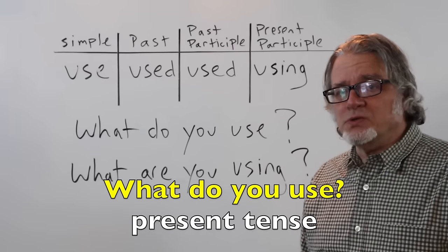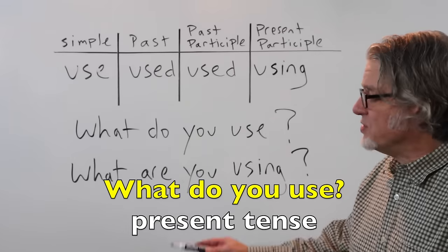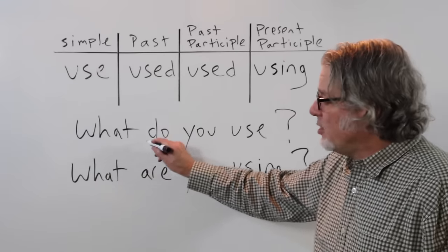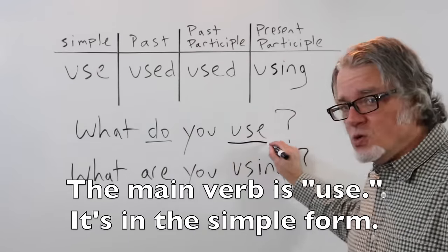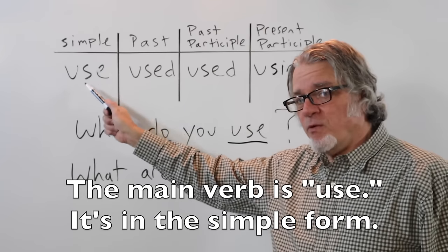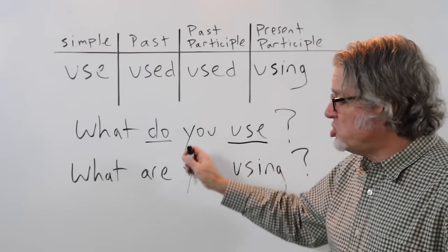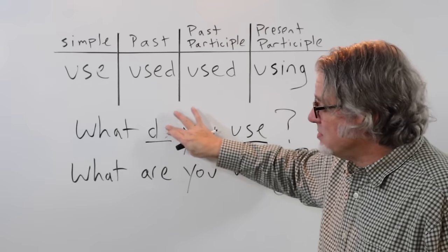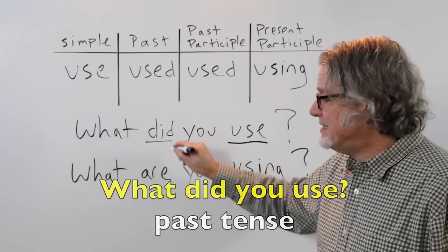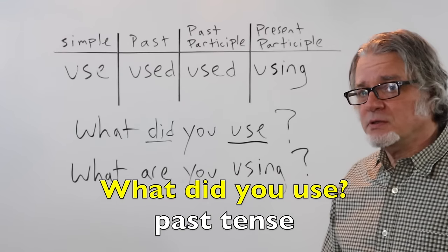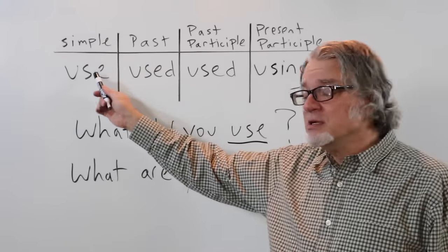What do you use? This question is in the present tense. The helping verb is do, and the main verb is use. It's in the simple form. I can change this to the past tense just by changing the helping verb. What did you use? The main verb is still in the simple form.